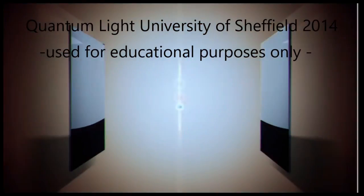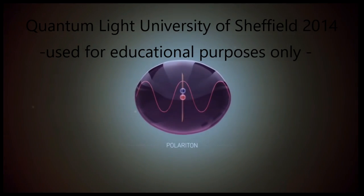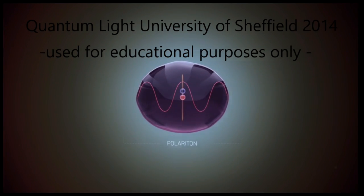Since the exciton and light are constantly interchanging, they behave overall like a new particle called a polariton, which has some of the properties of each.